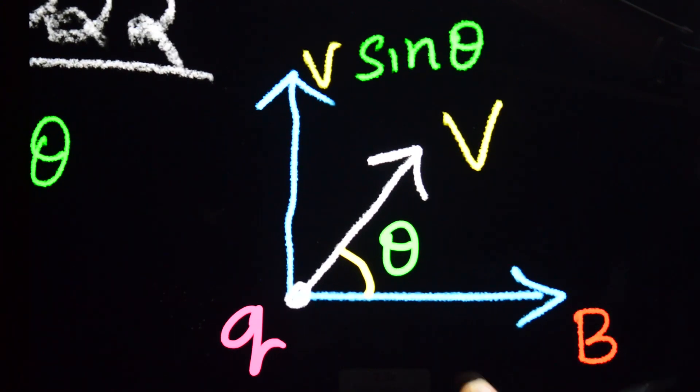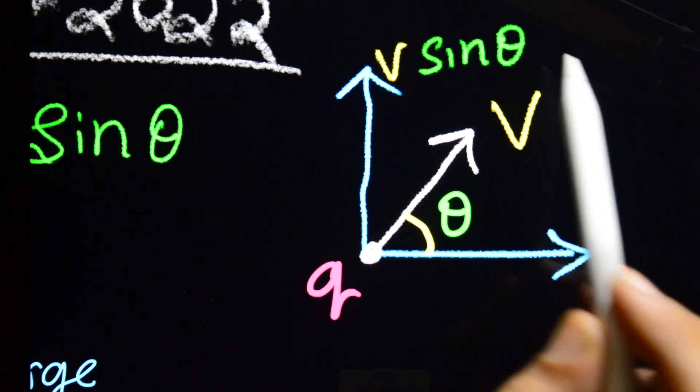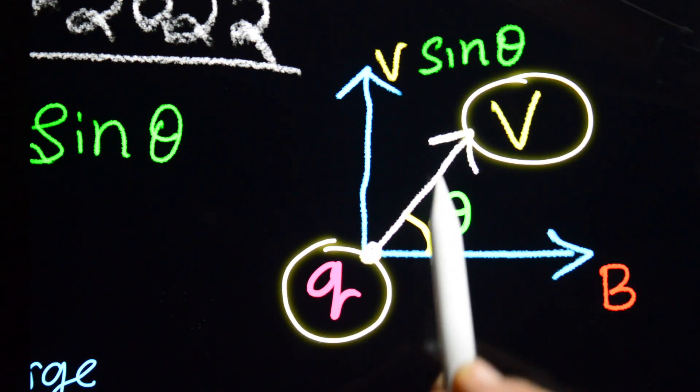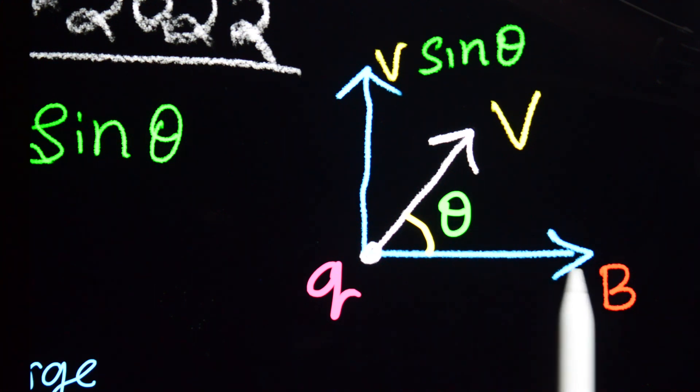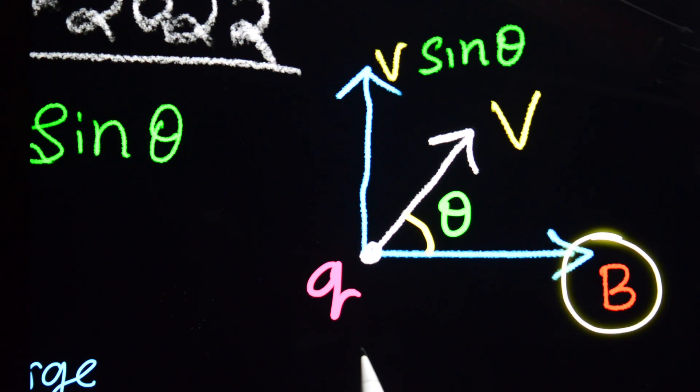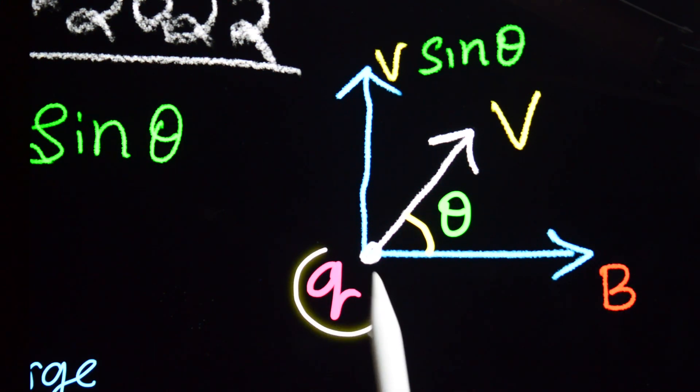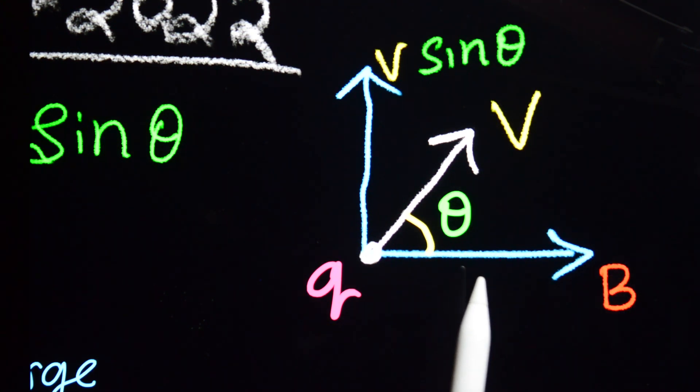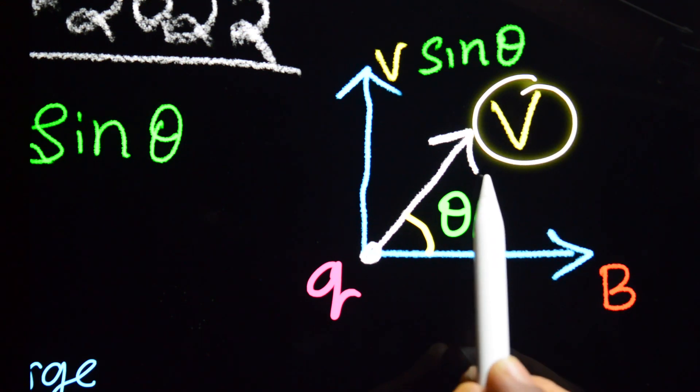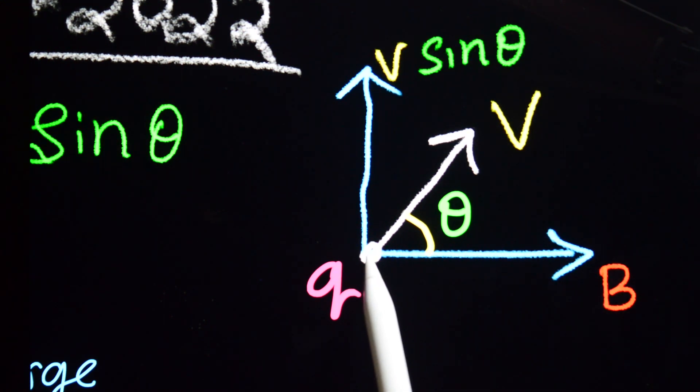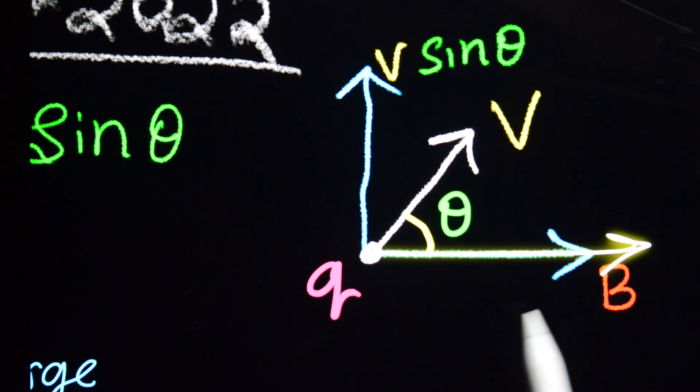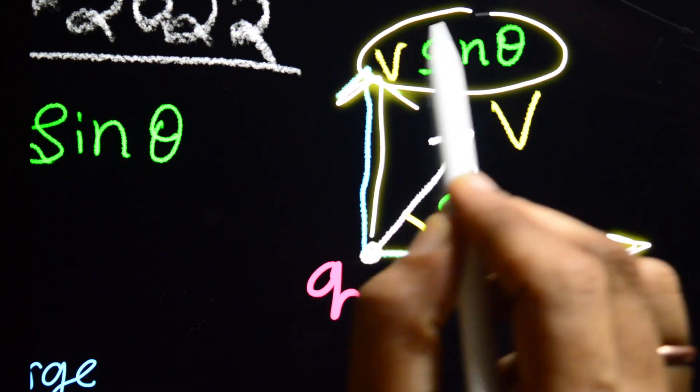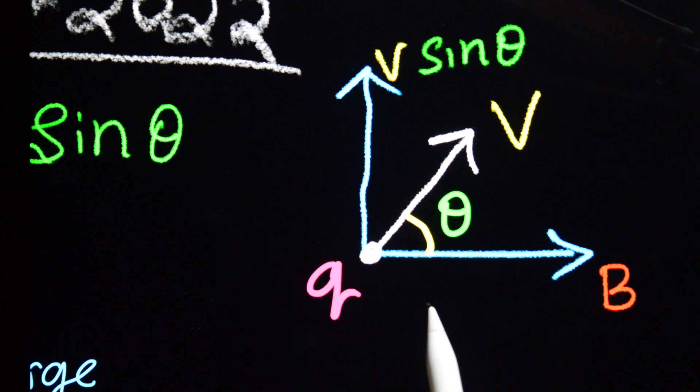Suppose this is a charge which is moving in a magnetic field with a velocity V, making an angle θ with a magnetic field. This B is a magnetic field and the charge q is moving with velocity V making an angle θ with the magnetic field. Now this velocity can be resolved into two components: one of the components is horizontal component and vertical component. A vertical component V sin θ and horizontal component V cos θ.